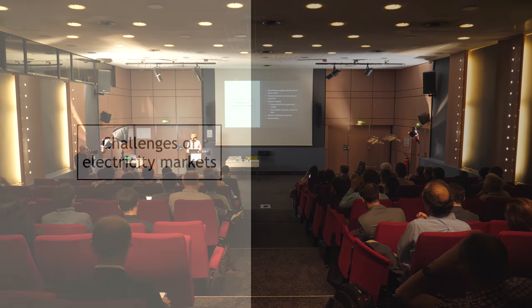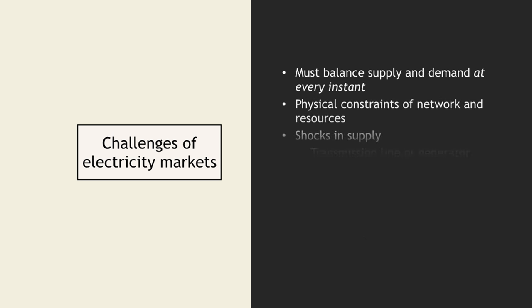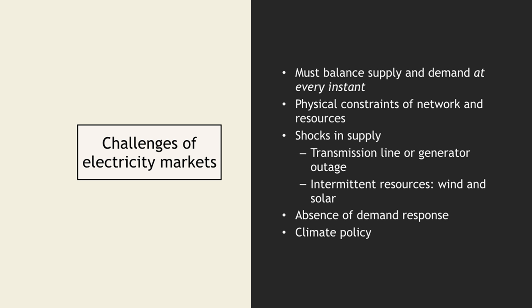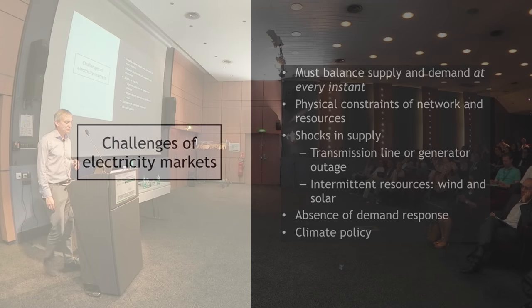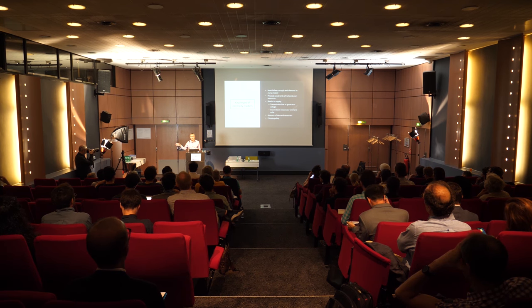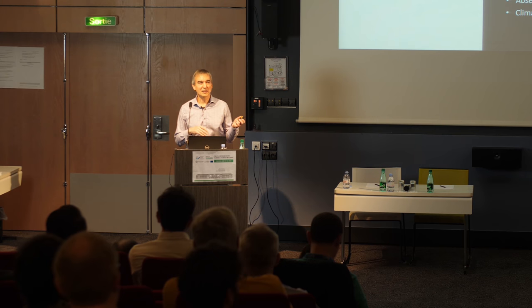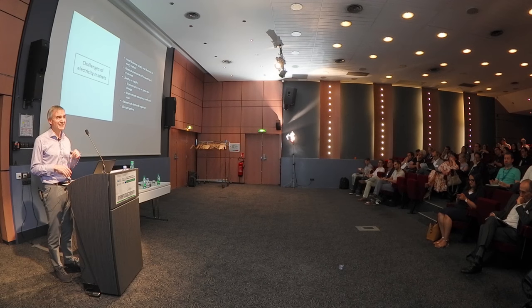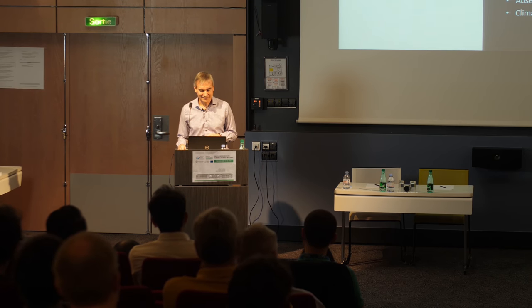Without short-run efficiency sending the right price signals in the spot markets, one can't have long-run efficiency. Electricity is a very interesting and challenging environment. We have to balance supply and demand at every instant, manage literally thousands of transmission and resource constraints, and handle shocks in supply. Transmission lines can fail, generators can fail, and we have an increasing share of renewables where the sun might not shine and the wind might not blow. Historically, the demand side has not been responsive and has not seen the spot price, so all adjustments have been done on the supply side.